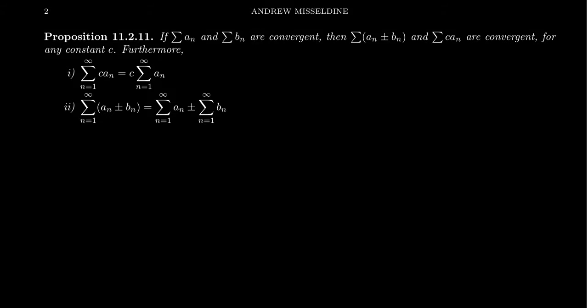In this video, I want to talk about some properties of infinite series. Suppose we have two series — the sum of sequence A and the sum of sequence B — and suppose these two series are convergent. Then it turns out that if you add together the sequences, the associated series will be convergent. Or if you take sequence A and multiply it by some scalar C, then the associated series will likewise be convergent for any constant.